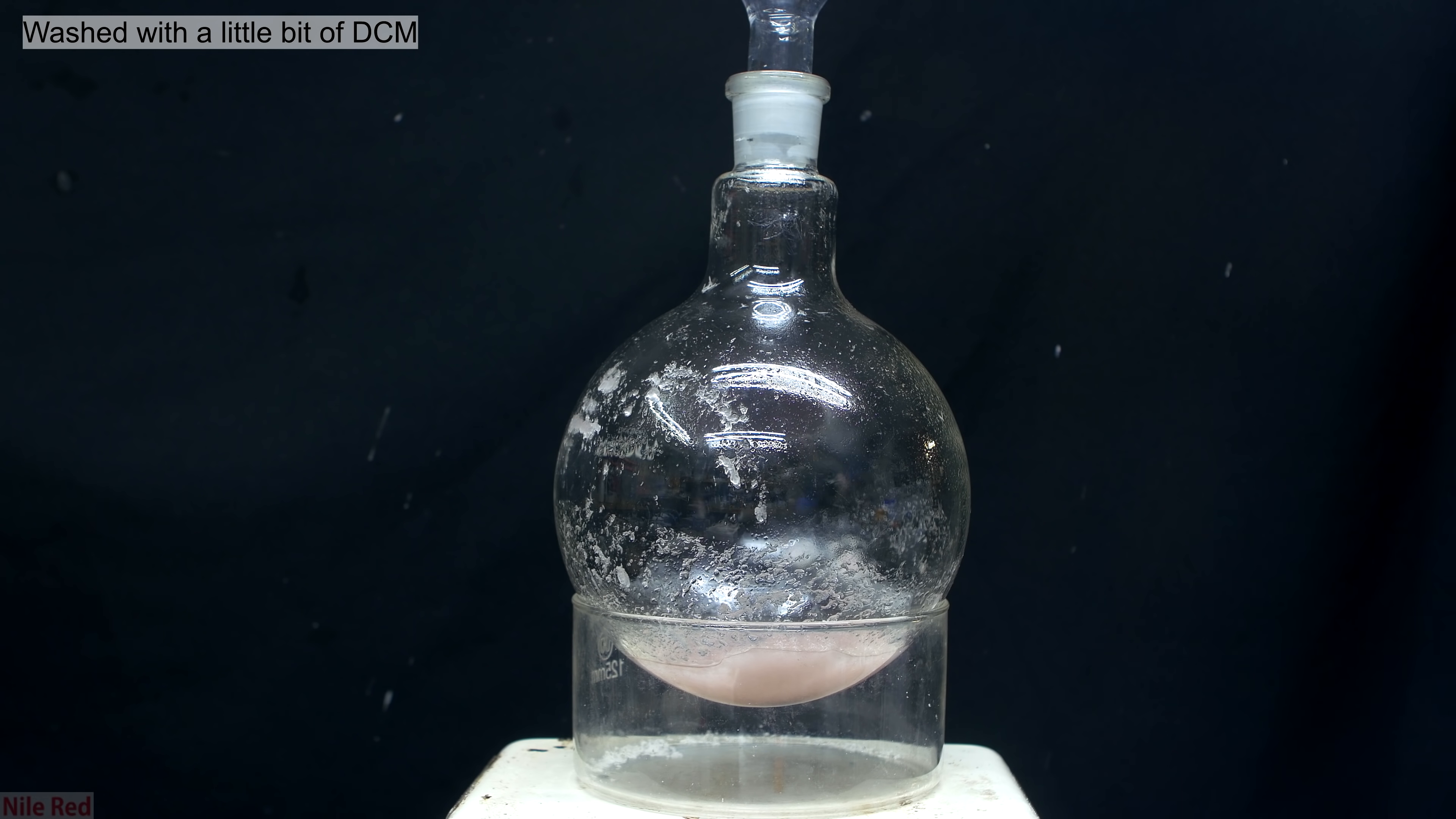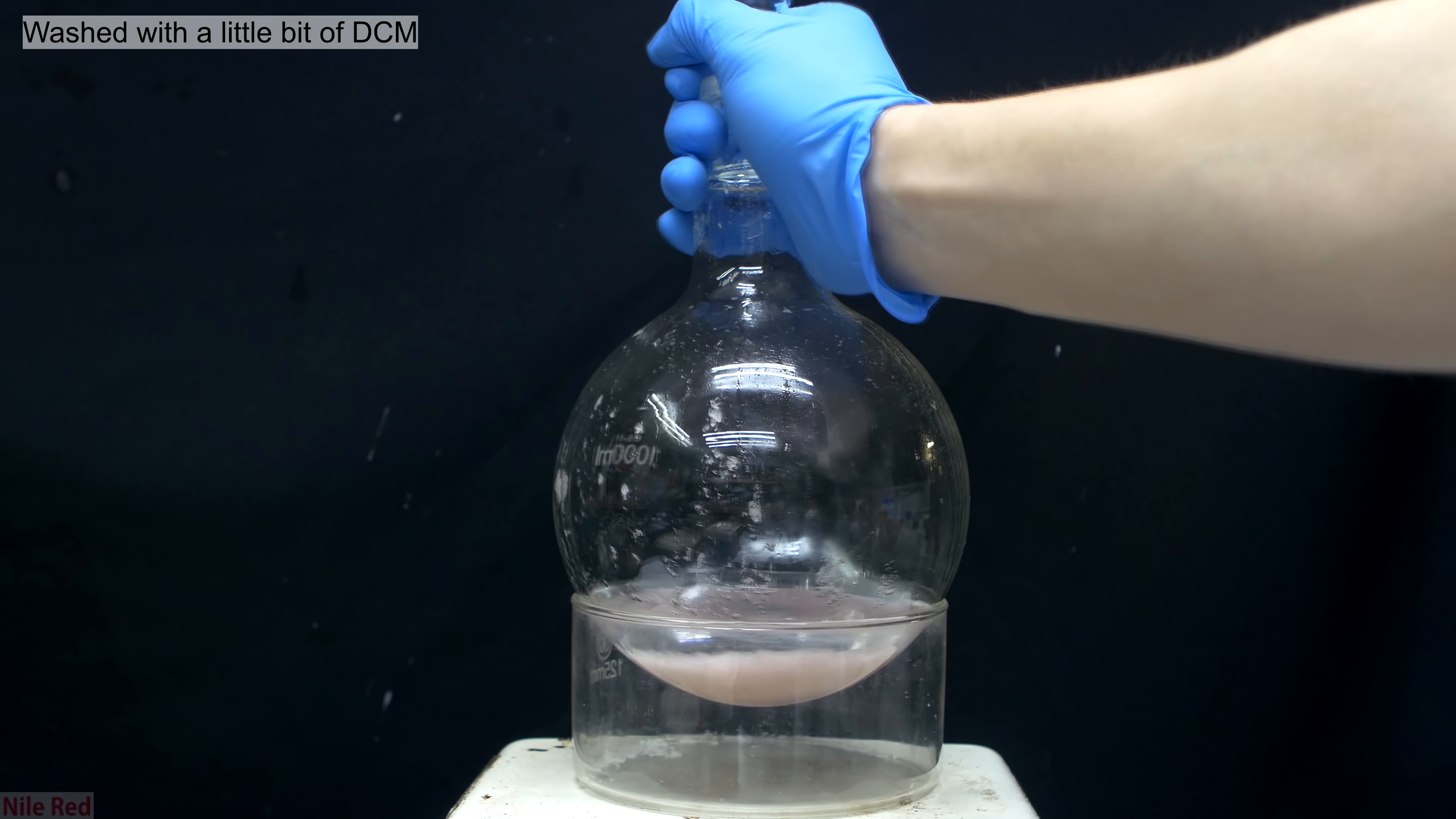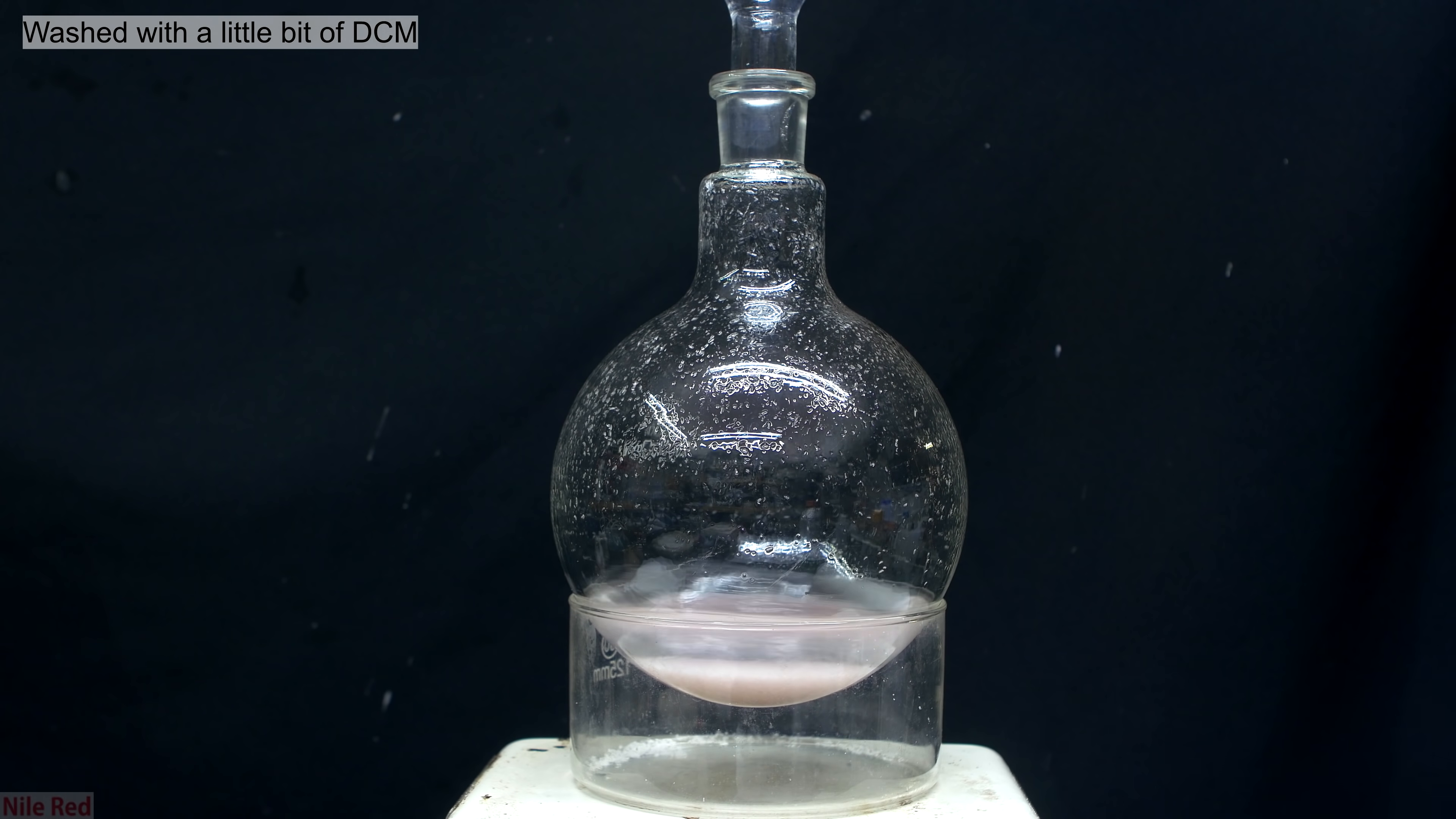To get rid of the toluene on the oxalic acid, I did a few washings with dichloromethane, because DCM is much more volatile than toluene. One thing that's interesting is if you look at the oxalic acid now, it's actually slightly pink. Honestly, I don't really know why, but I don't think the color really matters too much.